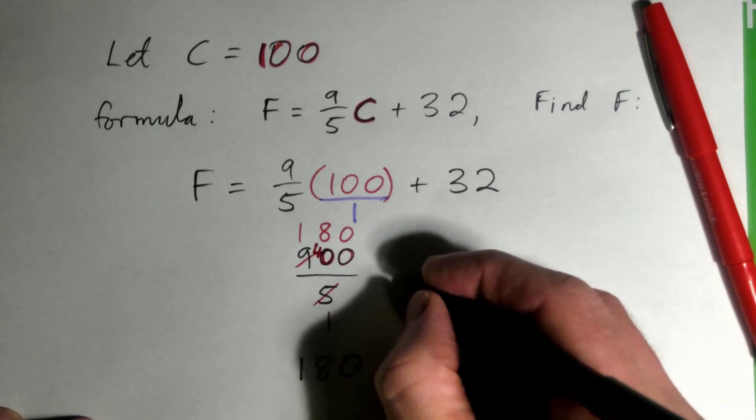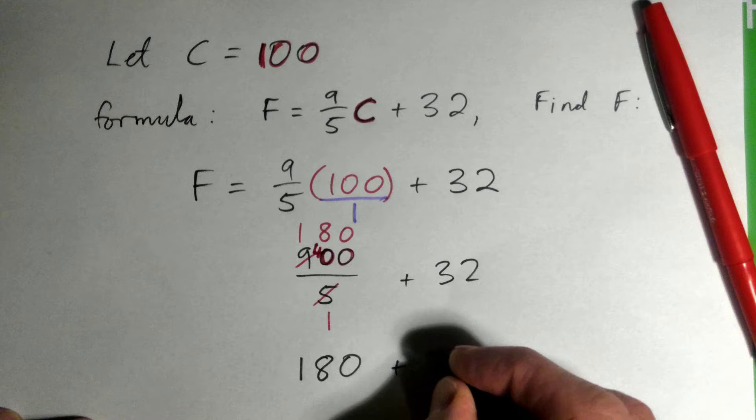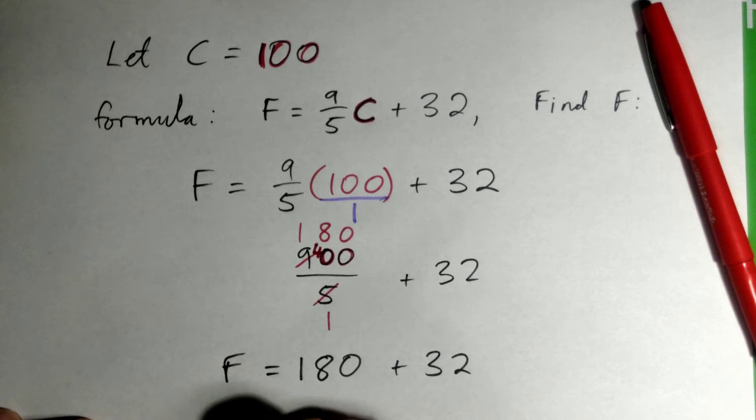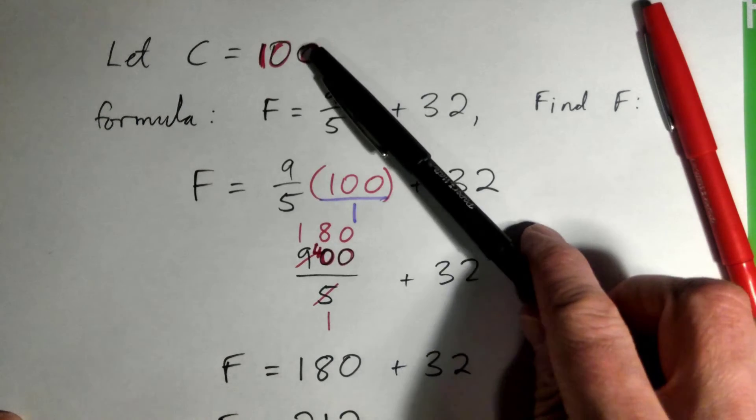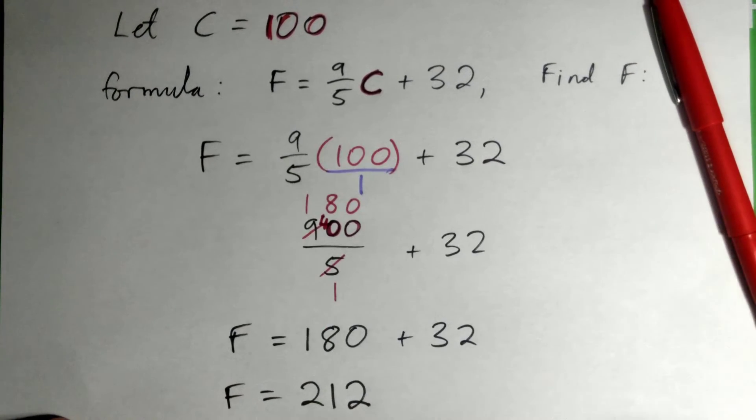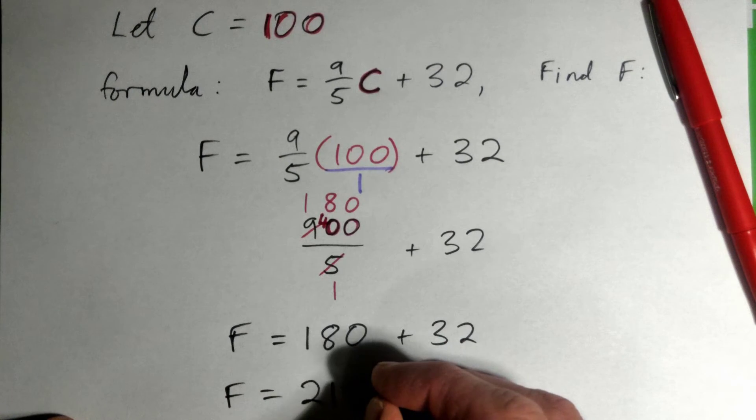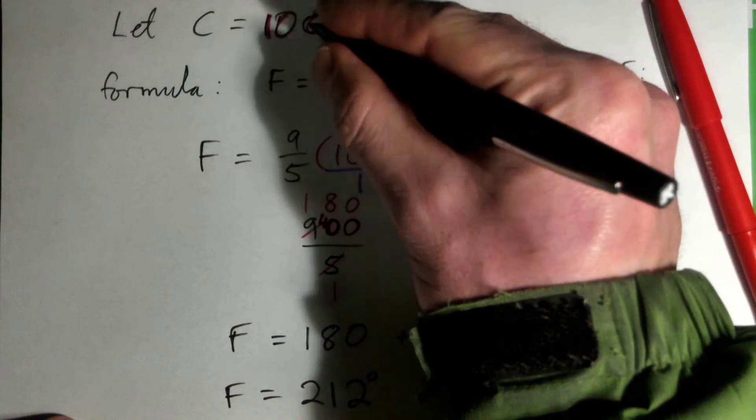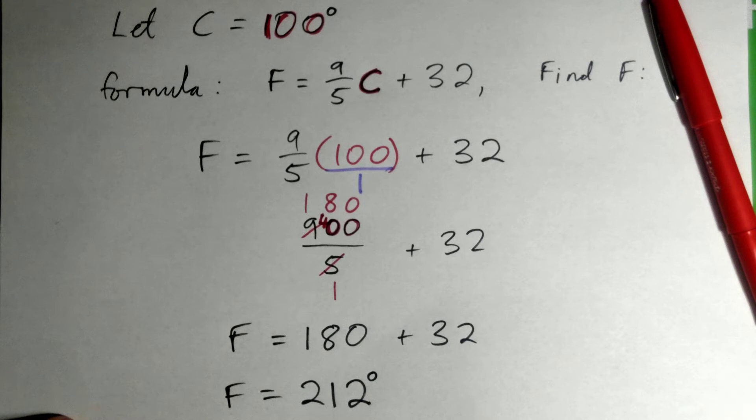But don't forget, we still have our plus 32 at the end, right? So 180 plus 32 is 212. So a hundred degrees Celsius is the same thing as 212 degrees Fahrenheit. Degrees, you put a little circle in the top right here. That's degrees Celsius, that's degrees Fahrenheit. Different scales, but they're the same actual temperature.